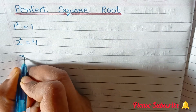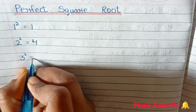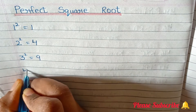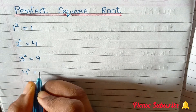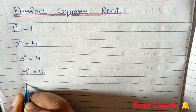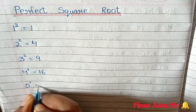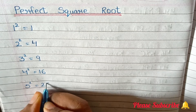1 square is equals to 1. 2 square is equals to 4. 3 square is equals to 9. 4 square is equals to 16. 5 square is equals to 25.